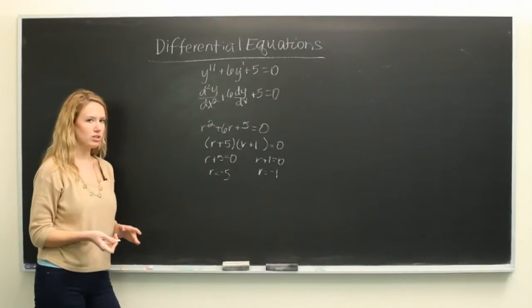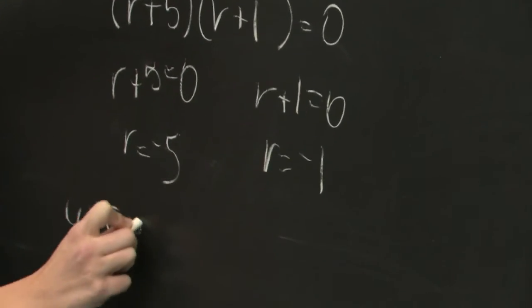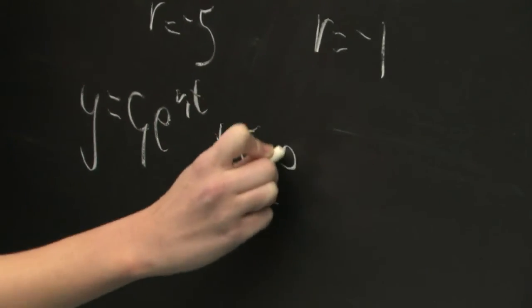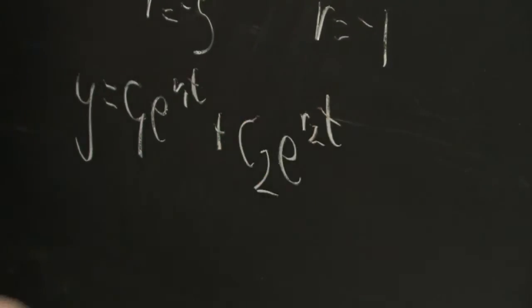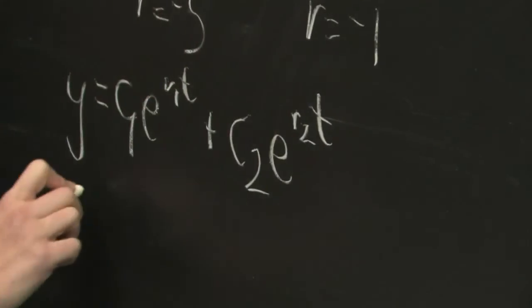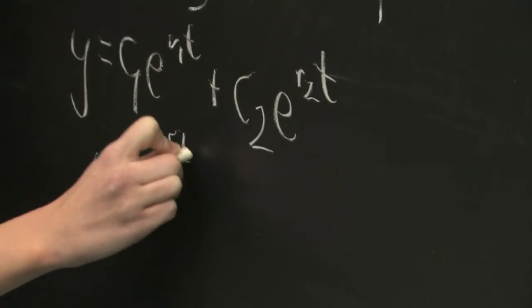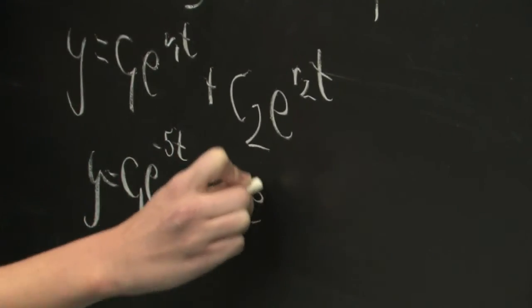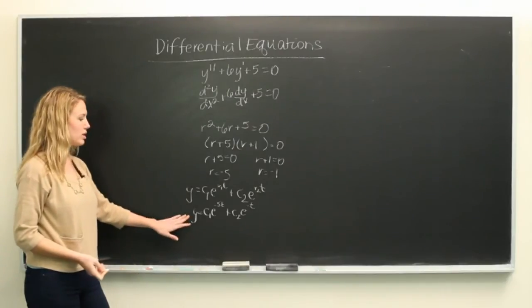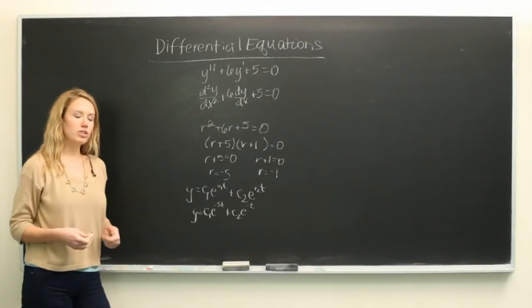So a case 1 differential equation will follow the form y is equal to c1e to the r1t plus c2e to the r2t. And to solve our differential equation all we need to do is plug in for r.